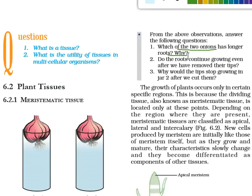The question is: which of the two onions has longer roots and why? The answer is jar one has longer roots. In jar two, we cut the root tip, which means the meristematic tissues at the tip were removed. That is why jar two roots are not growing. In jar one, we did not cut the root, so it is still growing. In jar two, it is not growing.